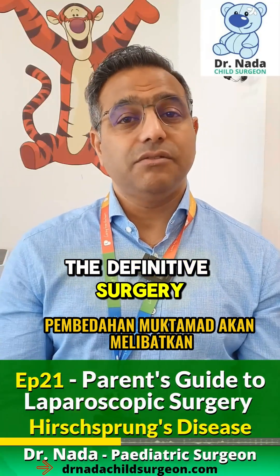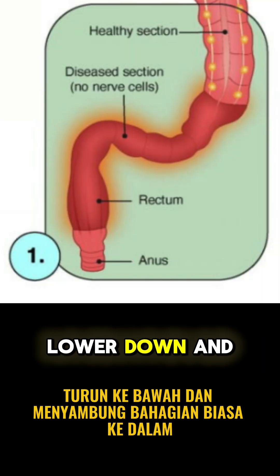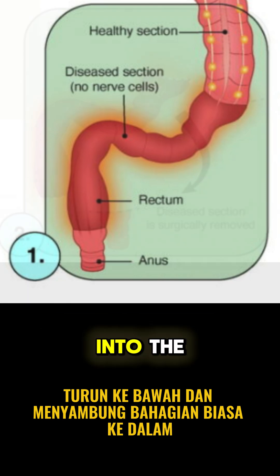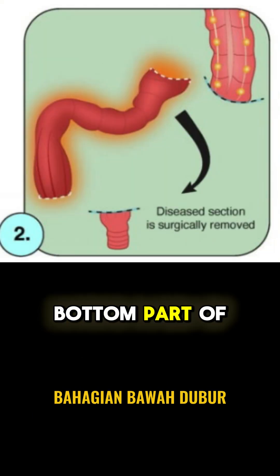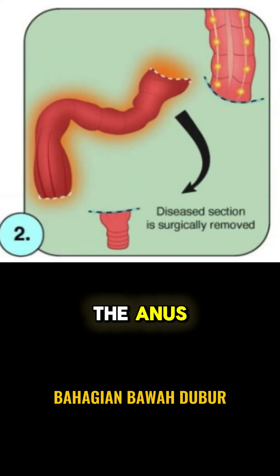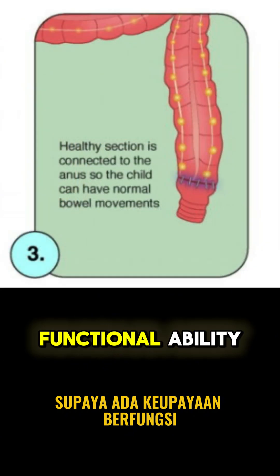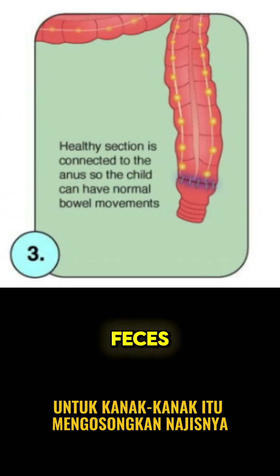The definitive surgery involves cutting off the abnormal part lower down and joining the normal part to the bottom of the anus, so that the child has functional ability to evacuate his feces.